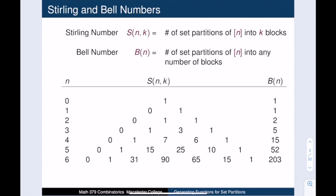The right-hand column contains the values of the Bell numbers. B(n) is the number of ways to partition the set of n things into any number of parts. So the nth Bell number is just the sum of the Stirling numbers of that same row.